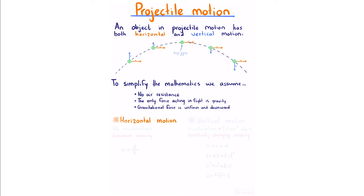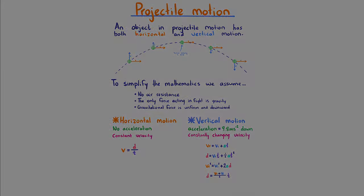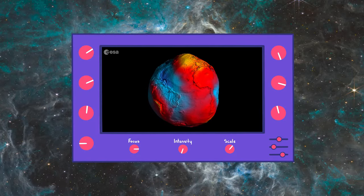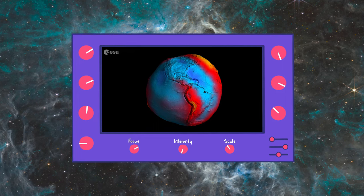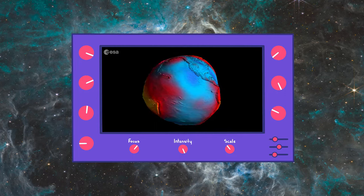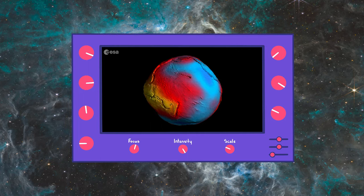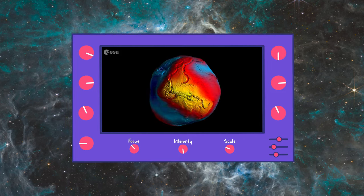For horizontal motion there is no acceleration, giving constant velocity described by v = d/t. For vertical motion we have an acceleration of 9.8 ms⁻² downwards, resulting in constantly changing velocity described with kinematic equations. It's important to understand that when we give a value for gravitational acceleration such as 9.81 ms⁻², this value is very much an estimate, as shown by models of gravity variation across Earth's surface.